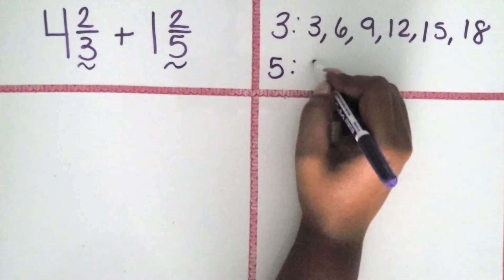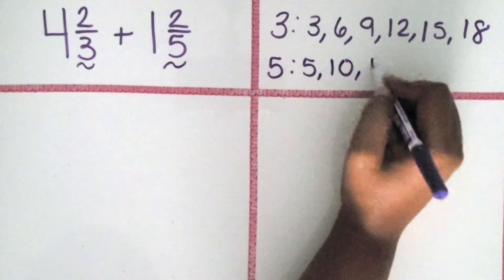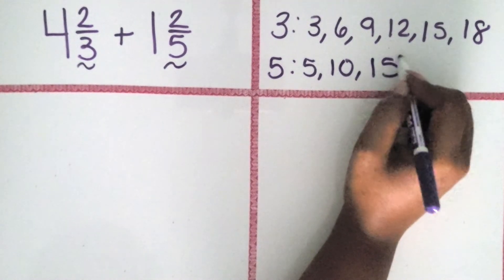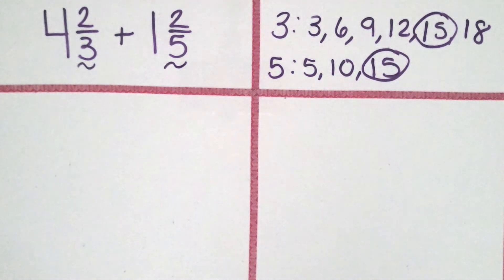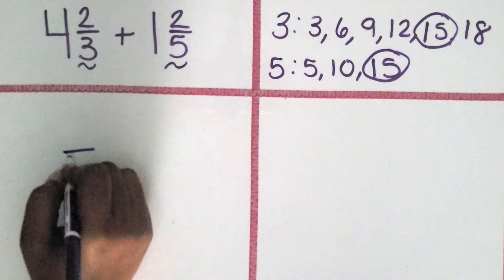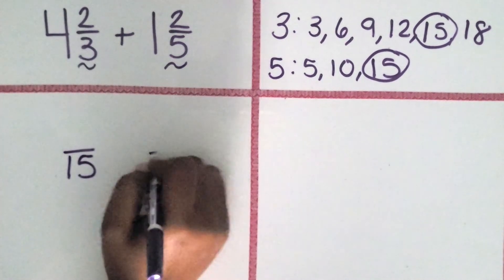and some for 5: 5, 10, 15, I can stop there. We can see that the first multiple they have in common, which is also the lowest, is 15. So we'll use that as the common denominator of our two equivalent fractions.